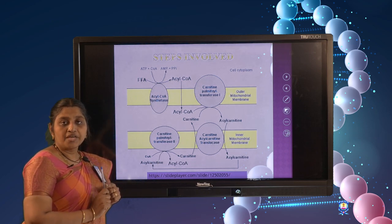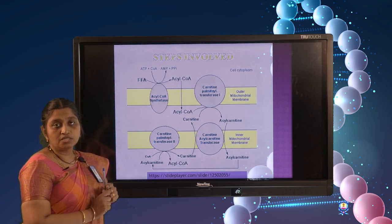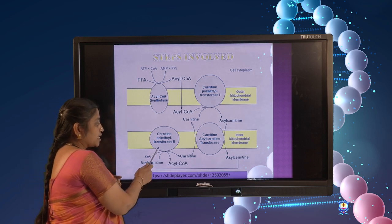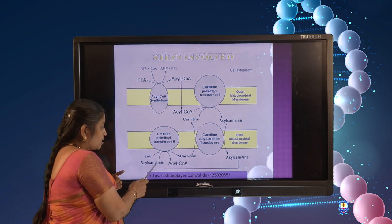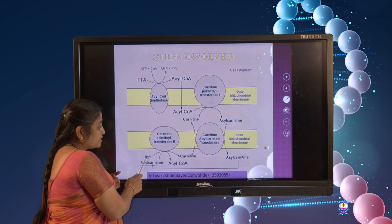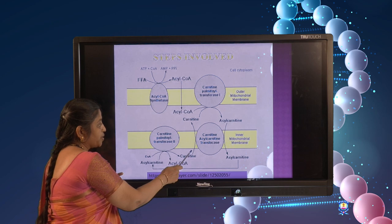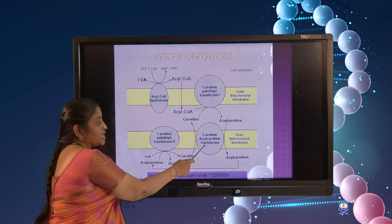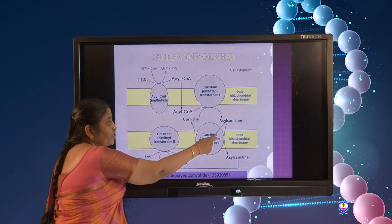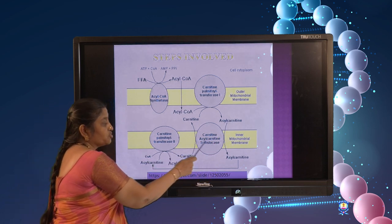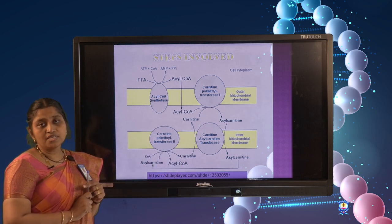Since we require acyl-CoA and not acyl-carnitine inside the matrix, acyl-carnitine must be converted back into acyl-CoA by the second enzyme CPT2. Acyl-carnitine combines with coenzyme A to regenerate acyl-CoA, and the released carnitine finds its way back into the cytosol by the same translocase enzyme. Translocase thus functions in a coupling process: for every one acyl-carnitine entering the mitochondrial matrix, one carnitine is returned to the cytosol.